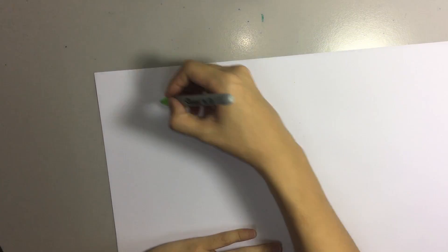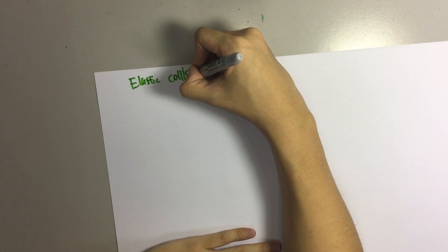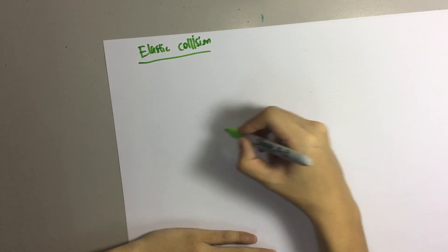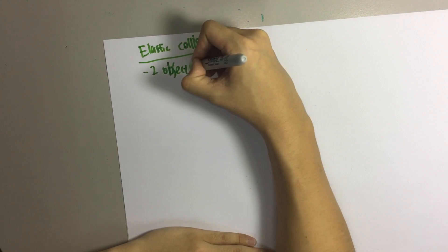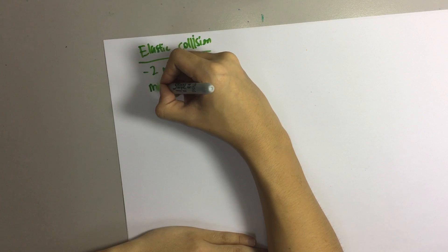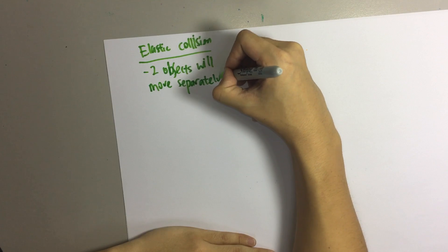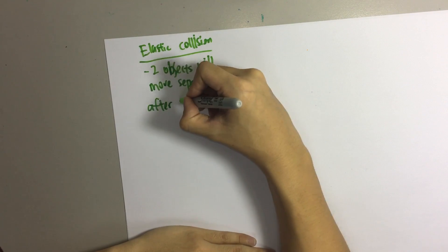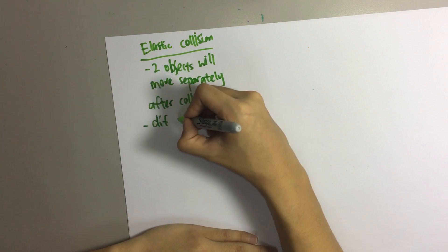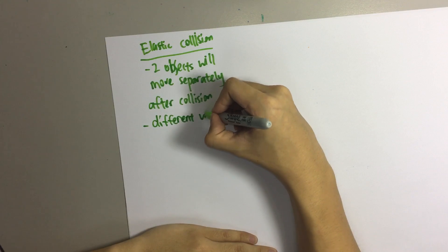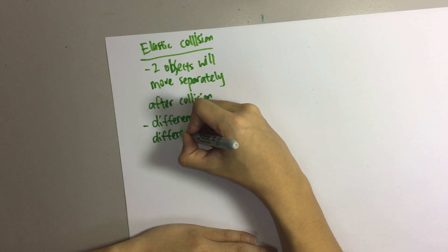The first type of collision we will go through is called elastic collision. In elastic collision, the two objects will move separately after collision, meaning they will have different velocities and may be moving in different directions.